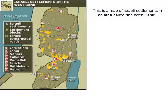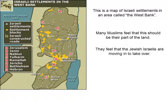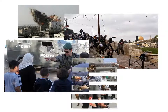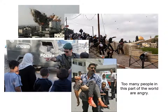Here is a map of Israeli settlements in an area called the West Bank. Many Muslims feel that this should be their part of the land. They feel that Jewish Israelis are moving in in order to take over. This makes some Muslims of the area angry. Too many people in this part of the world are angry.